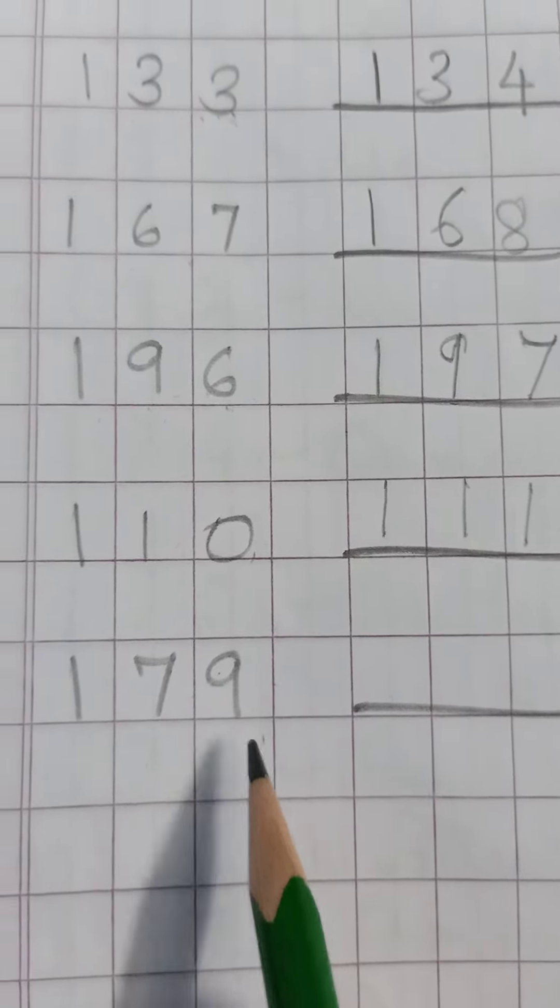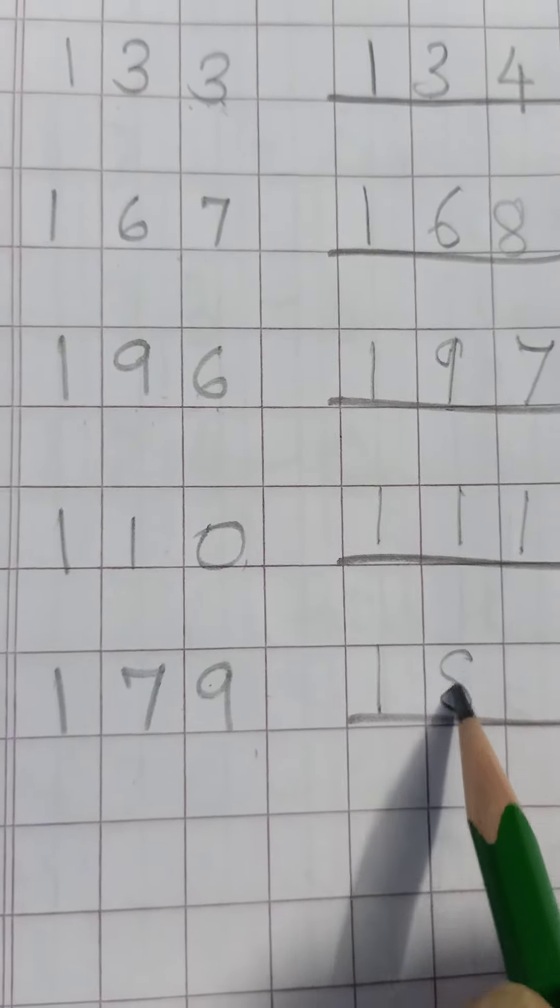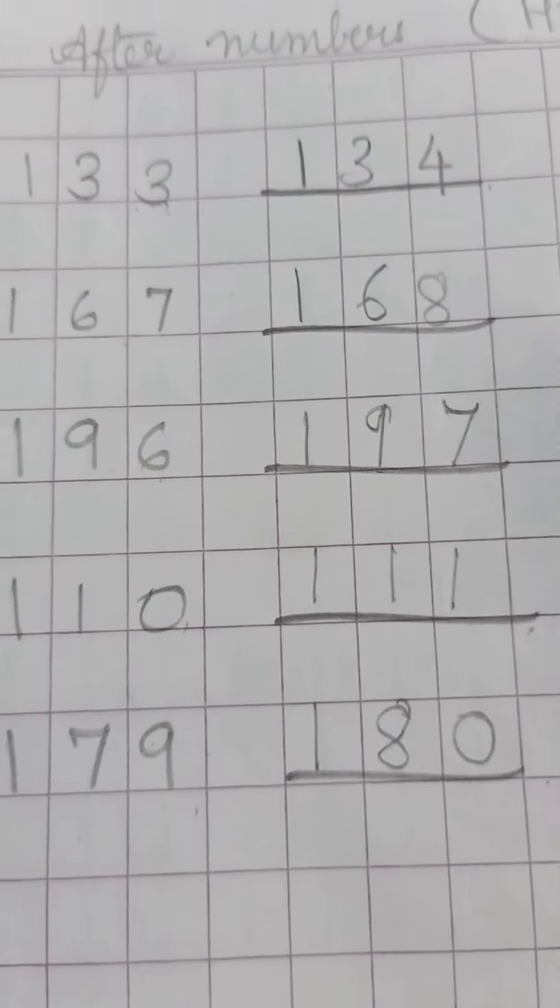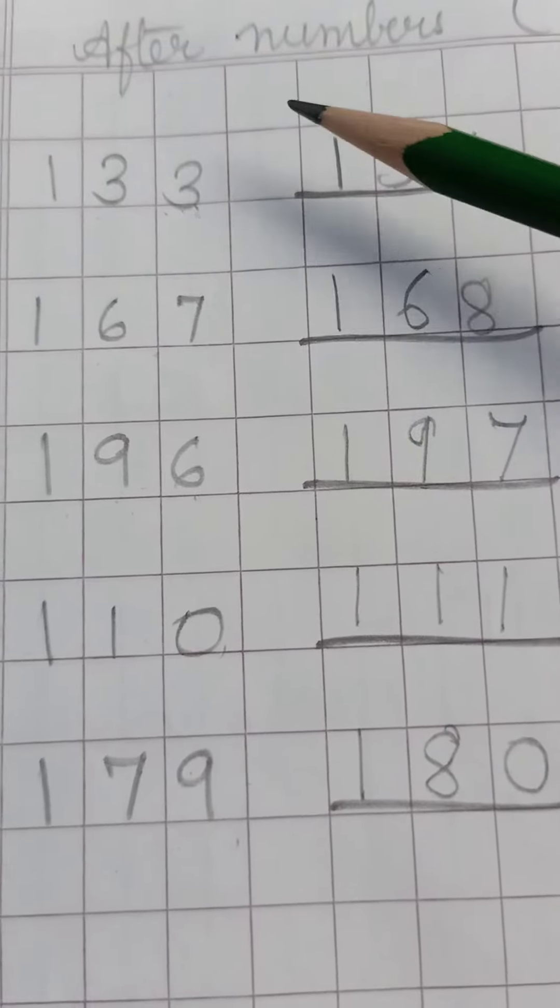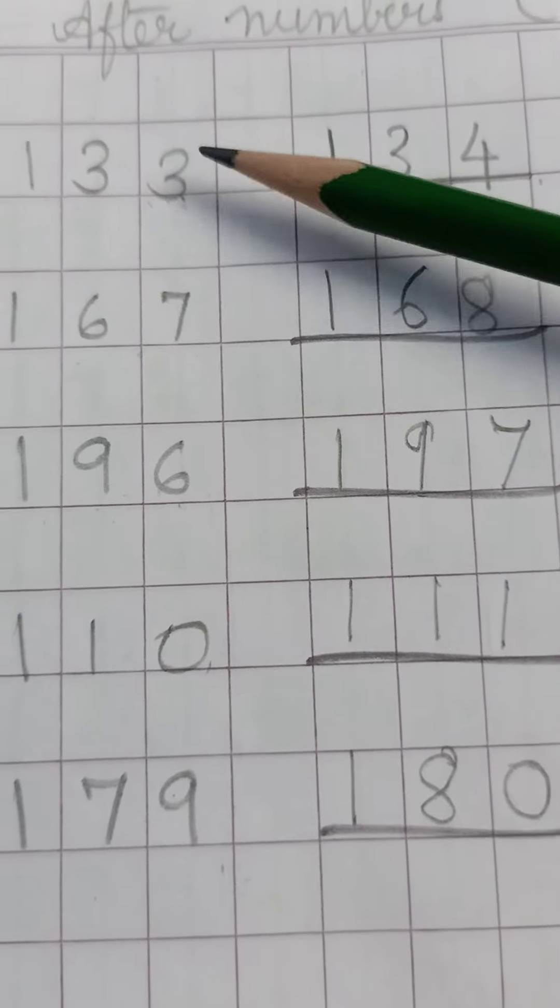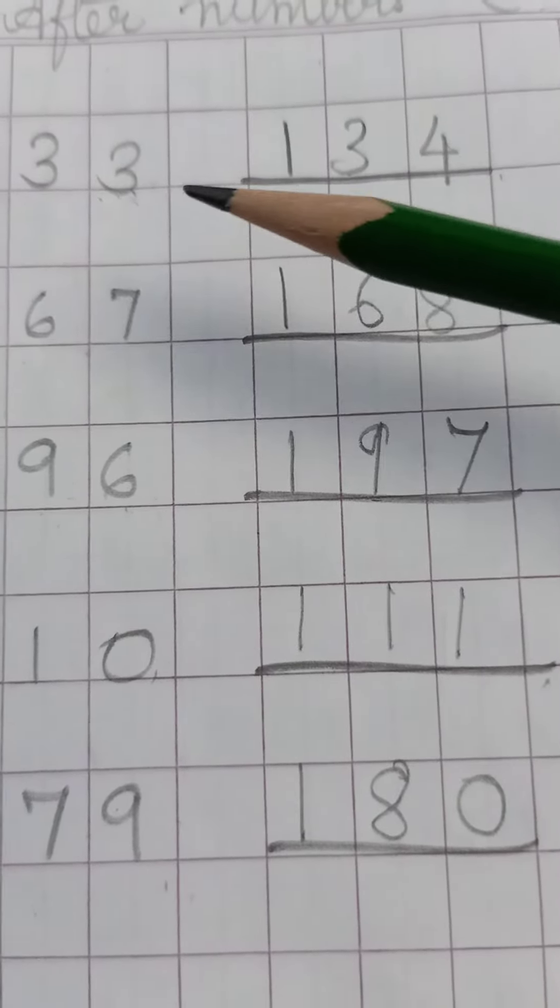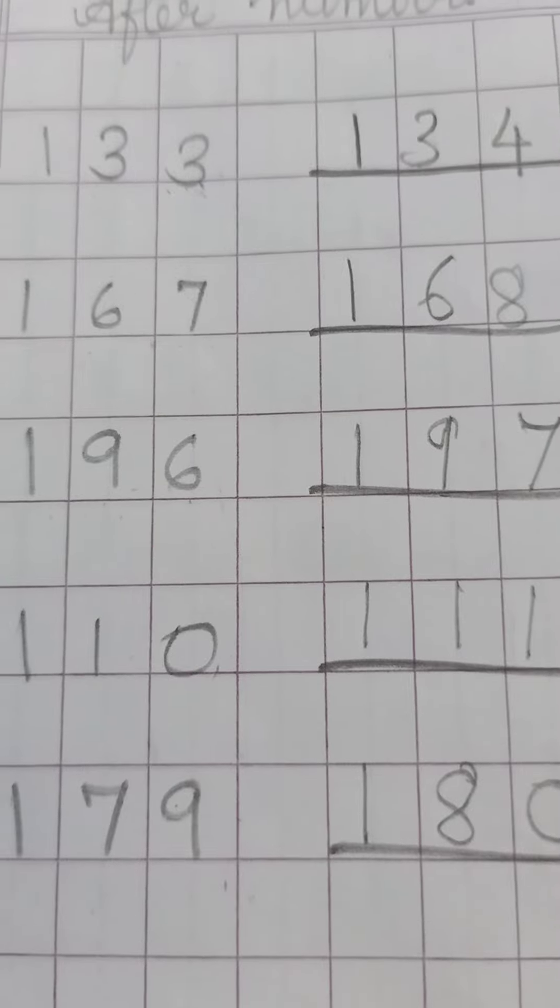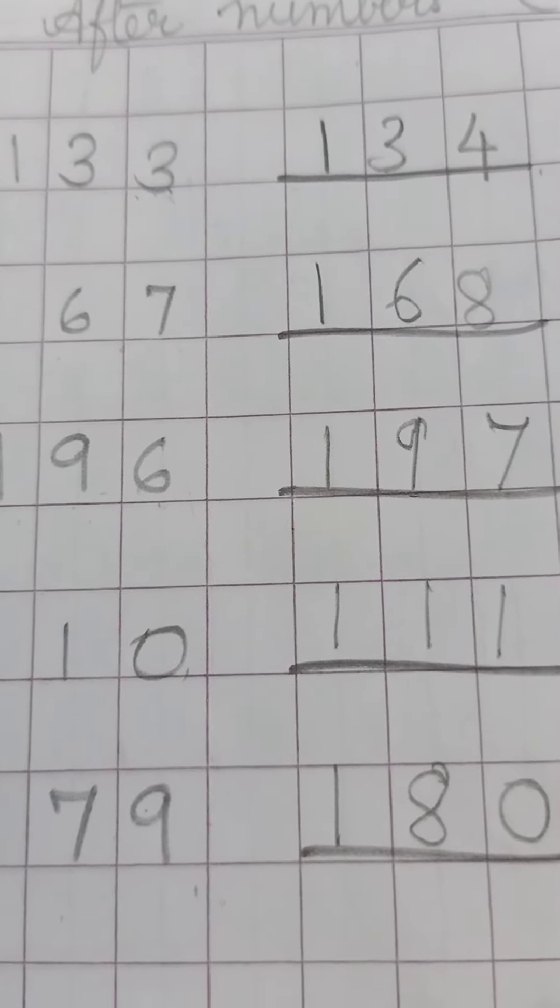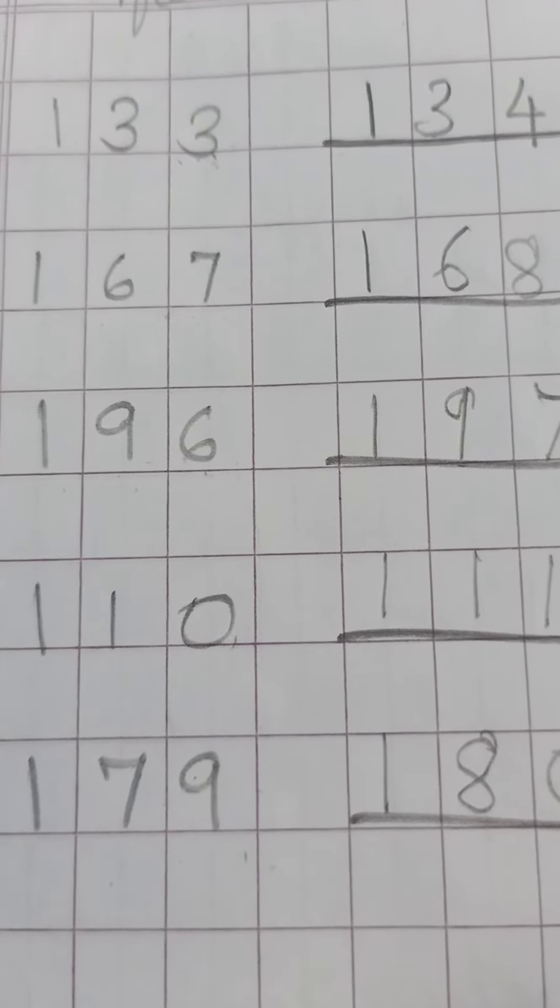After 179, 180 will come. So this is called 'after numbers' - the number which comes after the given number. Look here children, now you have to practice more in your rough copy.